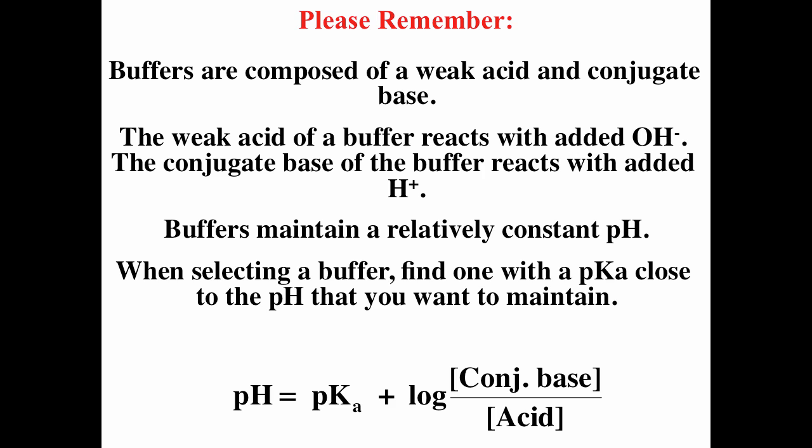To summarize: buffers are composed of a weak acid and its conjugate base. The weak acid reacts with any added hydroxide, and the conjugate base reacts with any added hydronium ions. These reactions have very large equilibrium constants, so you can almost consider them to go to completion. Buffers maintain a relatively constant pH, which is especially important for biological systems. When selecting a buffer, find one with a pKa close to the pH you want to maintain. The Henderson-Hasselbalch equation tells us to find an acid with a pKa close to the desired pH.